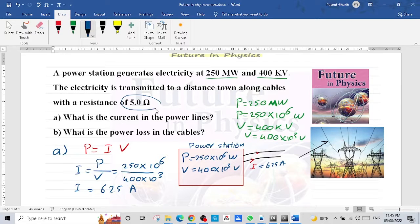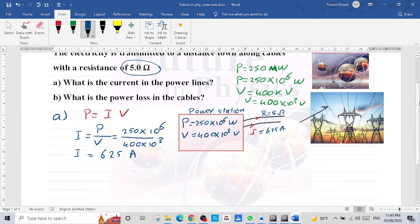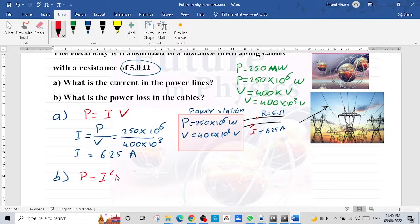Now the current in the cable is 625 ampere. The resistance of the cable is 5 ohm. We have the resistance and we have the current. So we can calculate the power in the cable. We use the formula P equals I squared R.